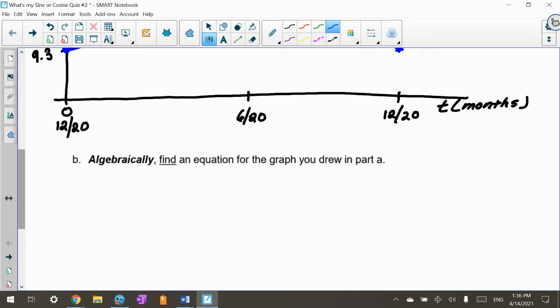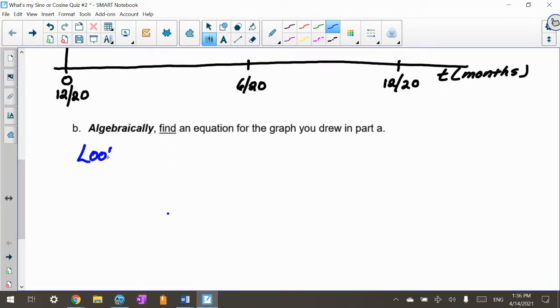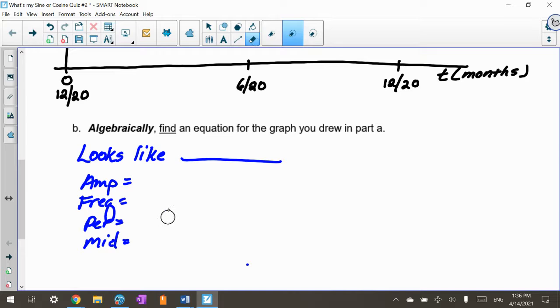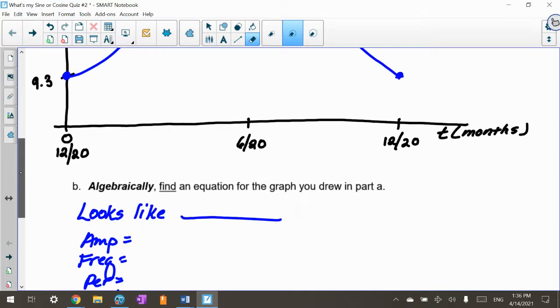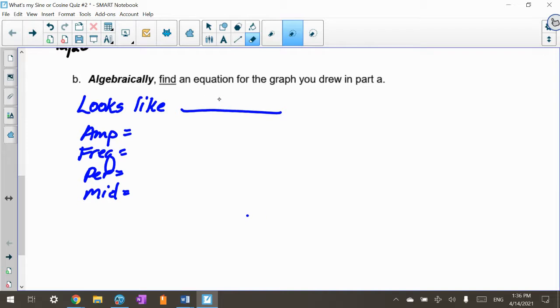Now we want to algebraically find an equation for this. I want you to do what I've always showed you. Write down amplitude, frequency, period, and midline. Because if you do this, it just kind of takes the guesswork out while you're doing this. As I look at my graph, it looks like a negative cosine curve. So I'm going to say this looks like negative cosine.